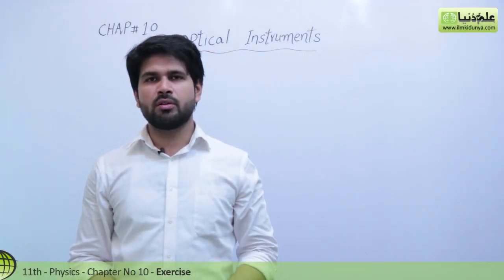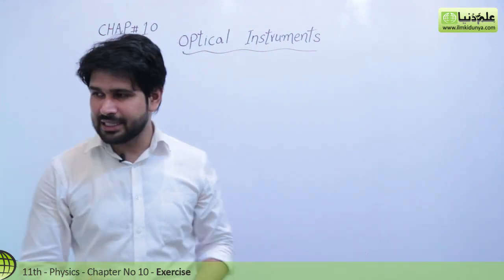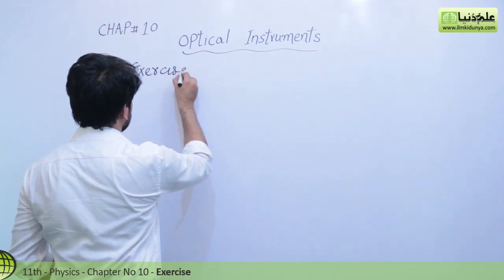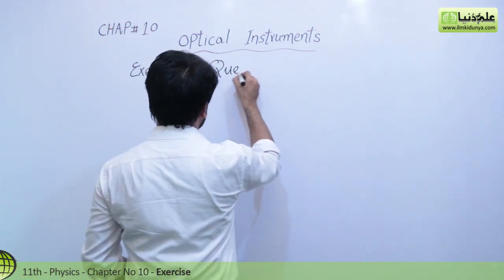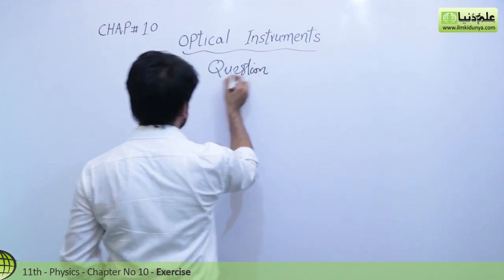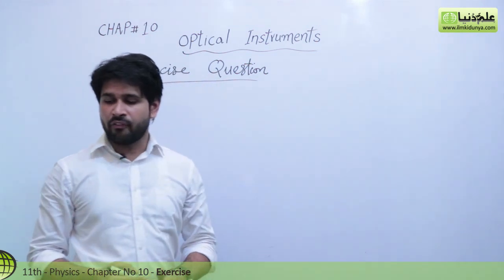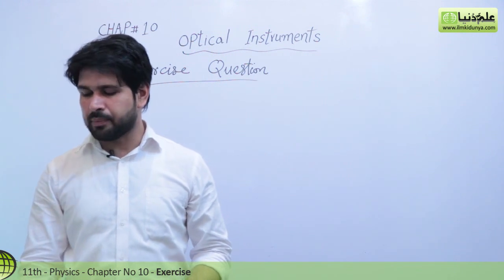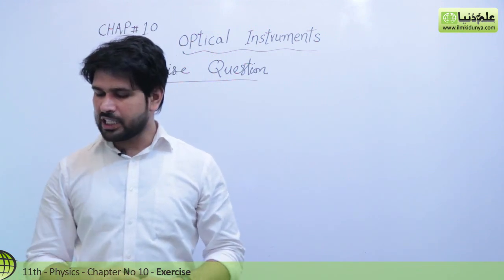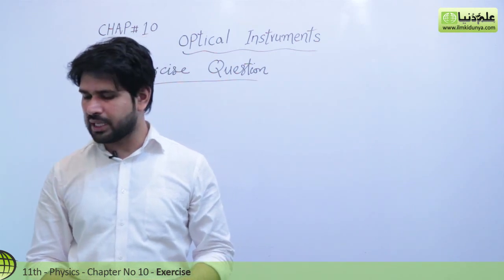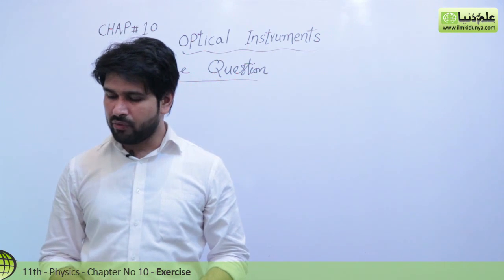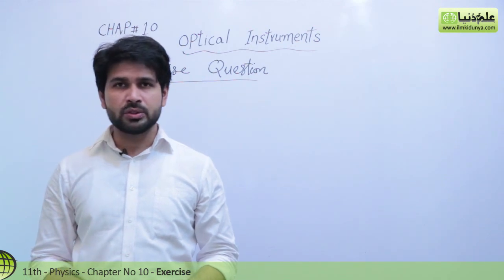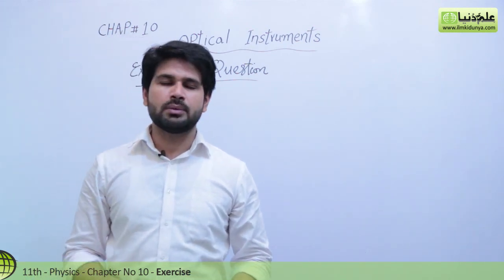Okay students, now we are going to solve our exercise questions. The exercise questions are the short questions of your exam. We are going to solve them and will tell you which to write and how much to write. The first exercise question is 10.1: What do you understand by linear magnification and angular magnification? Explain how a convex lens is used as a magnifier.